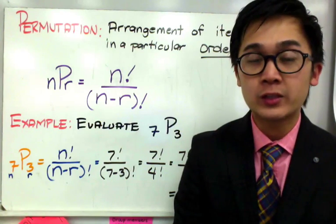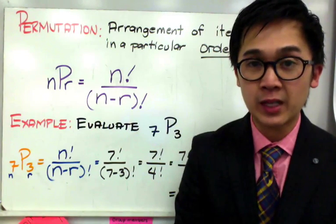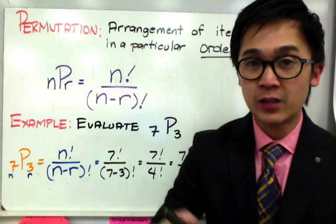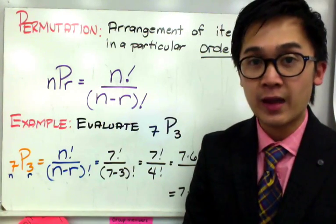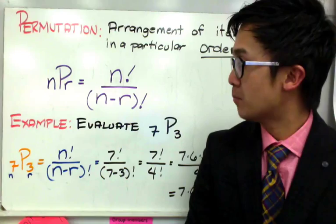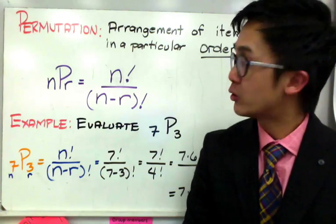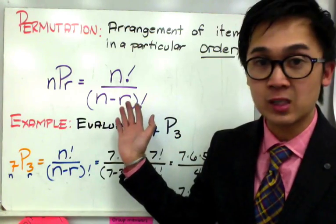And the formula for doing permutation or arranging items in different forms will be nPr equal to n factorial all over n minus r factorial. Now to use this formula as a direct substitution,